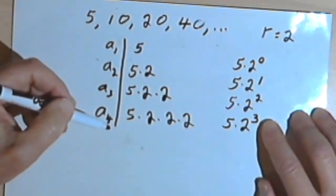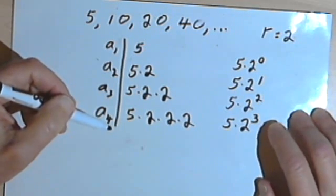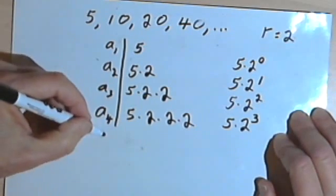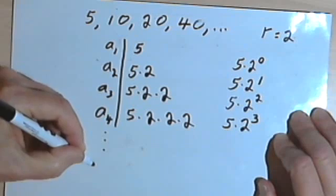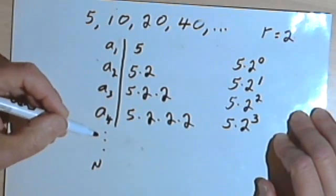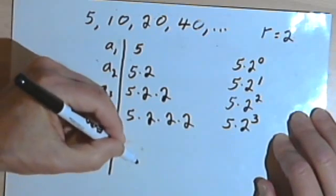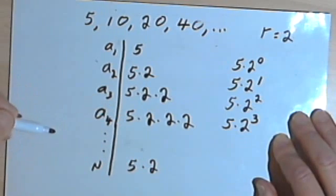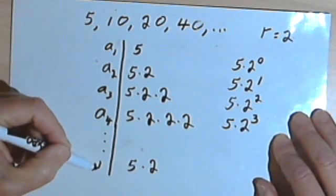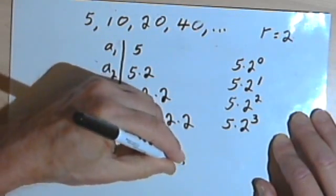and making that the exponent that I use to raise my 2 or common ratio to. So that means if I want to find whatever term, let's call that term number n, or the nth term, what I'm going to do is set that equal to 5 times 2, and my exponent is 1 less than the number of the term. If the number of the term is n, then the exponent is n minus 1.